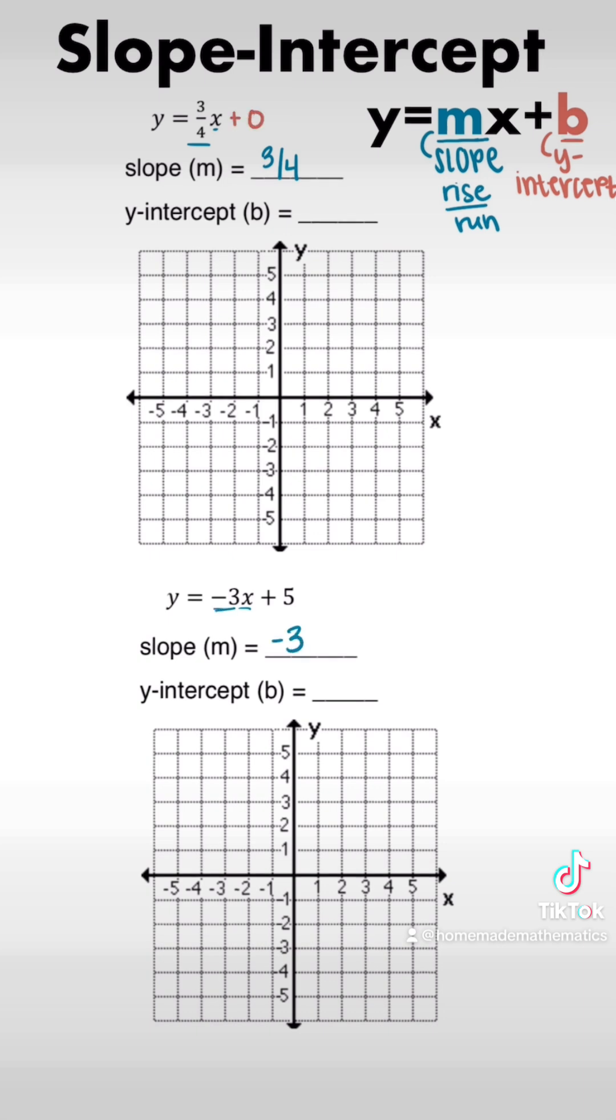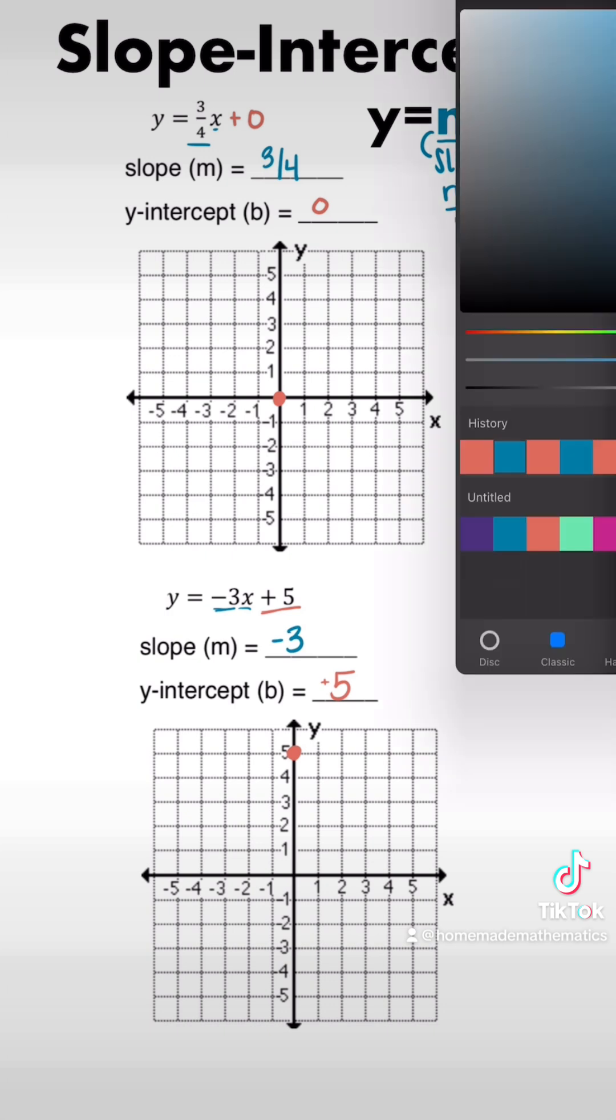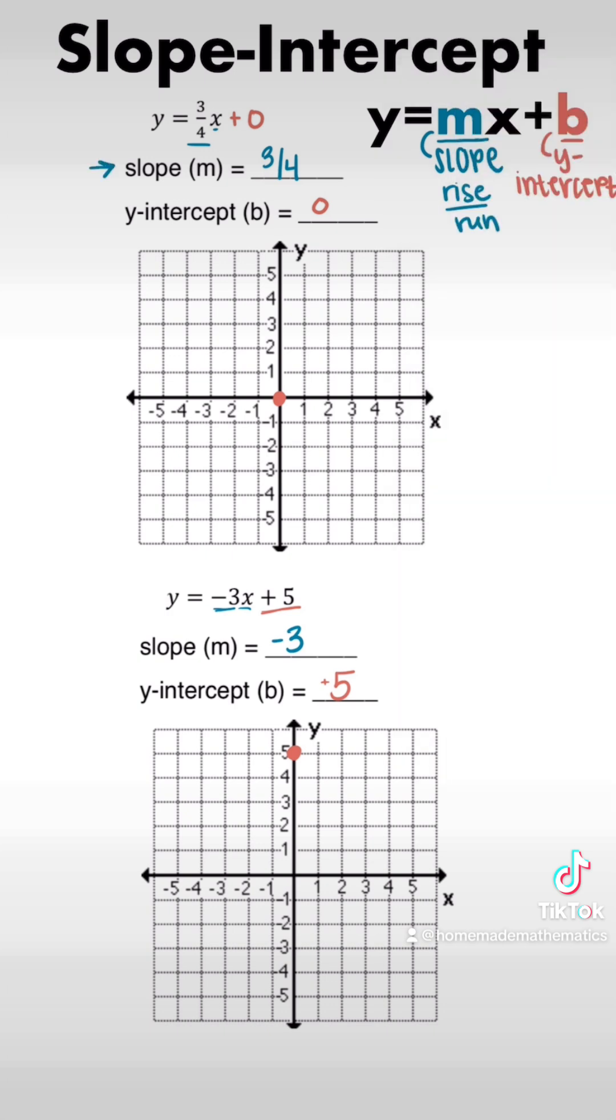Then moving on to our y-intercept, because this is slope-intercept form. Since there is nothing being added on, there's no constant being added on in our first one, it's going to be 0. And then in our second example, it's at positive 5. And that's important because that is going to be the very first point that we plot.